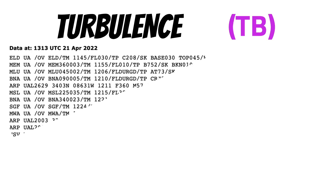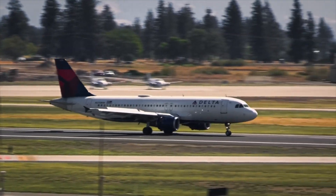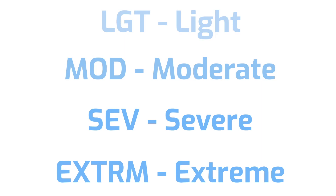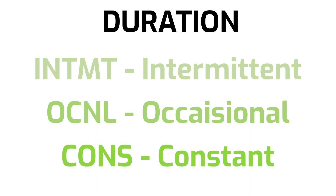Turbulence PIREPs use the code TB and come in a few flavors. Sometimes the pilot only reports the intensity — for example, light turbulence, or light to moderate. Some pilots report a smooth ride, which might indicate a good cruising altitude. Turbulence can range from light, moderate, severe, or even extreme. You may also see duration: intermittent, occasional, or constant. If the turbulence occurred at a different altitude than where the report was made, that range will be included — for example, light chop from flight level 240 to flight level 270.